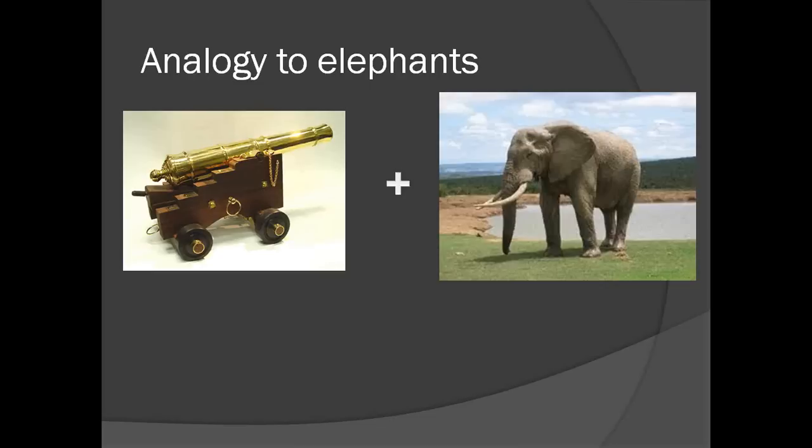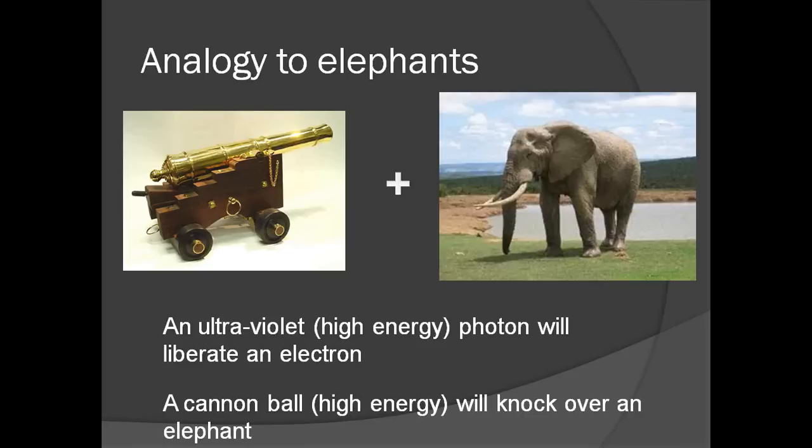This can be demonstrated by analogy. If you fire a high energy photon at an electron, you will liberate it from the metal. Correspondingly, if you fire a cannonball at an elephant, you will knock it over.